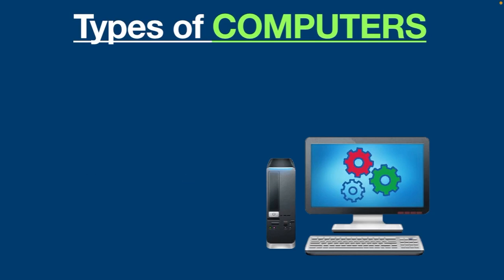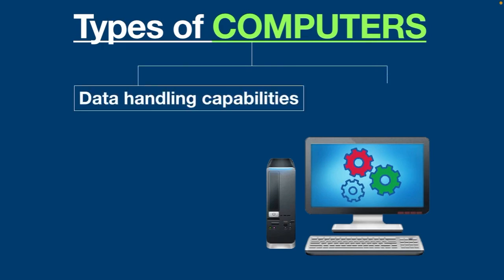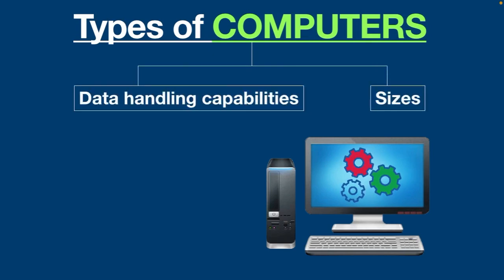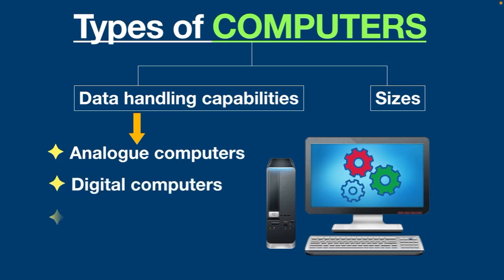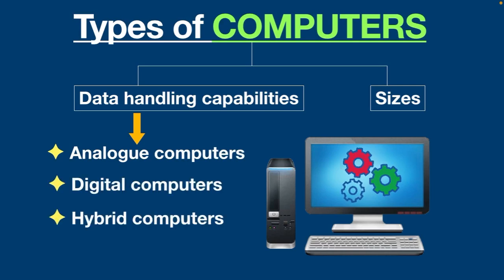Computers can be categorized in two ways: based on their data handling capabilities, and based on their sizes. If we consider data handling capabilities, then there are three types of computers: analog computers, digital computers, and hybrid computers.